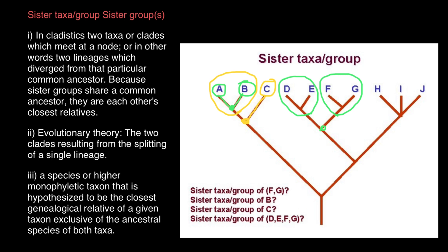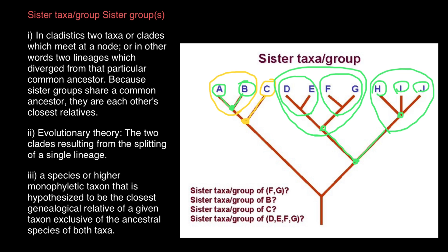The last question: we have to find the sister taxa group of species D, E, F, and G. We can circle D, E, F, and G into a single clade because they share a most recent common ancestor and all its descendants are included. Going down from this most recent common ancestor, we find the common ancestor shared with the clade that includes species H, I, and J. We can circle them into one clade as well, so we have two sister clades. Species H, I, and J are the sister taxa of D, E, F, and G. That's all for today — subscribe and see you in the next video, goodbye.